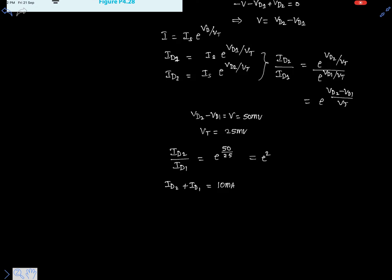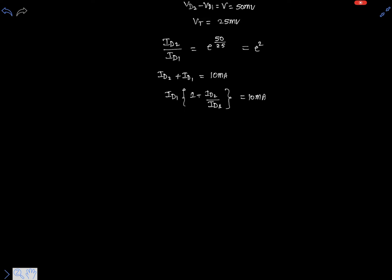The summation of both currents should equal 10 milliamps. Now just substitute this value. Let's take ID1 outside, then it is 1 plus ID2 divided by ID1 equals 10 milliamps. But ID2 divided by ID1 is nothing but e square.